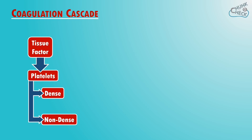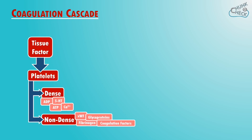There are two types of granules: dense granules, also called delta granules, and non-dense granules, also called alpha granules. The dense granules release ADP, ATP, serotonin and calcium, and the non-dense granules release glycoproteins, von Willebrand factor, fibrinogen and all the coagulation factors which feed into the coagulation cascade.